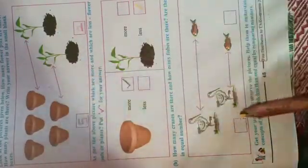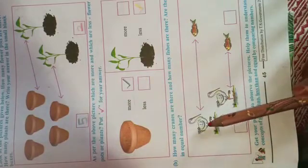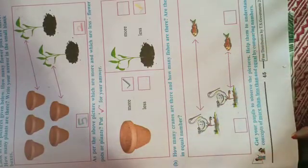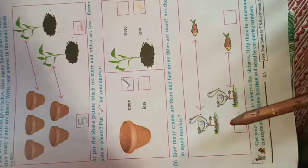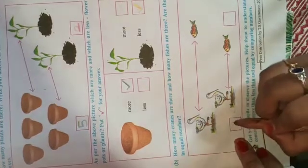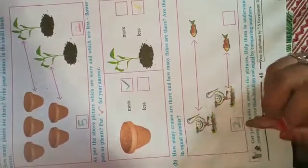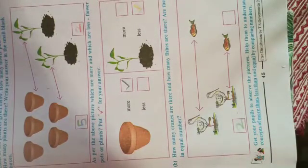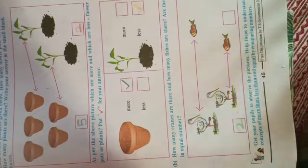Next, see we have cranes and fishes. How many cranes are there? Count them, one and two. We have two cranes, right? So I'm writing here two. And fishes, how many are there? One and two. So we have two fishes.